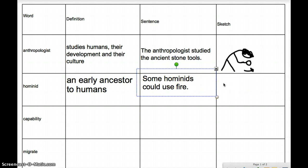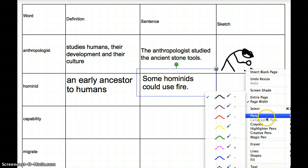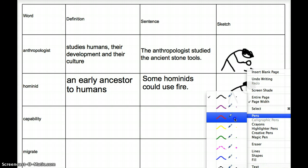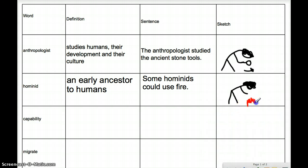Now, how would we draw a picture of this? I'm going to try to draw a picture of an early hominid that's trying to use fire. I'm going to have him hunched over just like the anthropologist, except instead of studying something, they've got a lot of hair because they don't have scissors. Instead of studying something, they're going to be trying to create fire. This one has been successful — they were able to create fire.